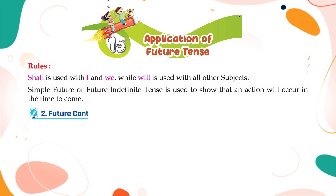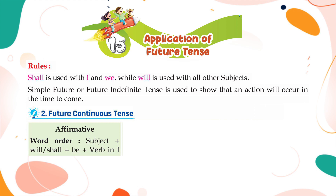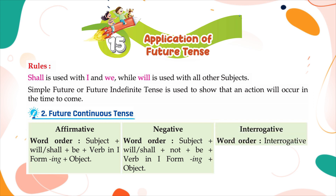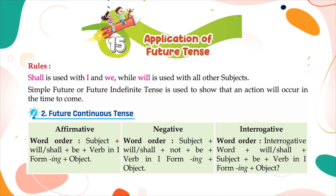Future Continuous Tense. Affirmative word order: subject plus will or shall plus be plus verb in first form plus -ing plus object. Negative word order: subject plus will or shall plus not plus be plus verb in first form plus -ing plus object. Interrogative word order: interrogative word plus will or shall plus subject plus be plus verb in first form plus -ing plus object.